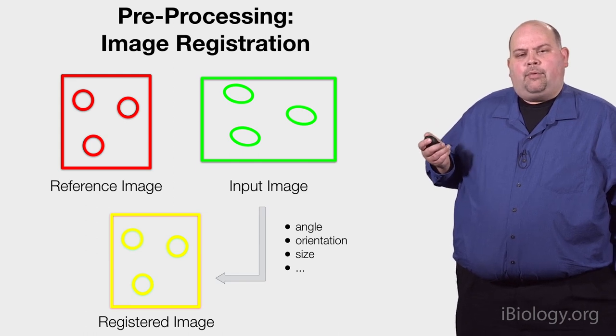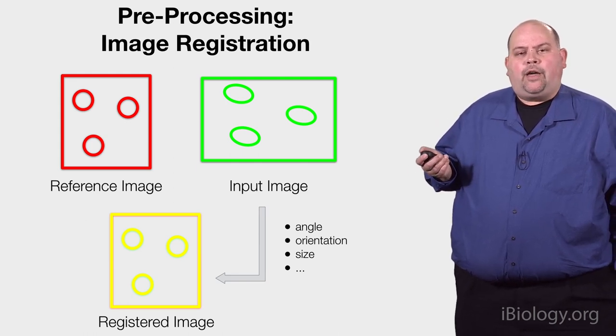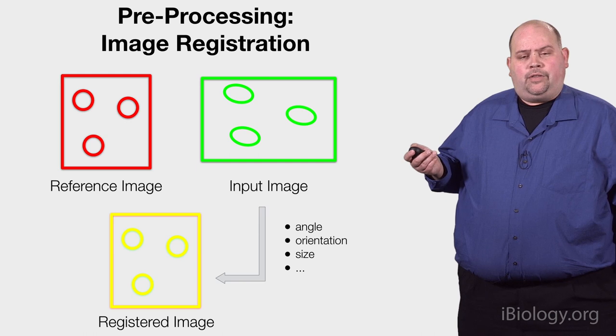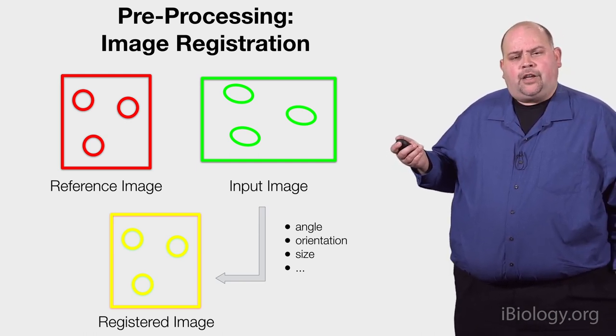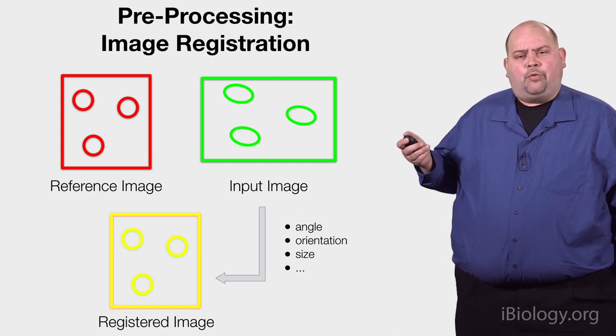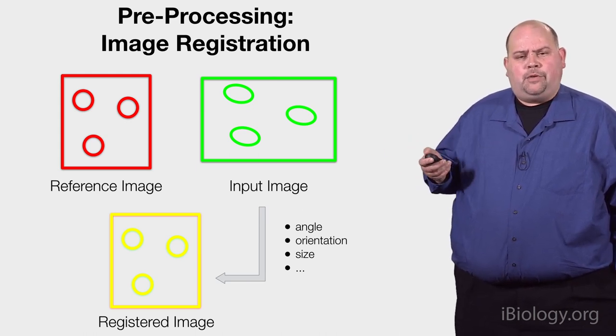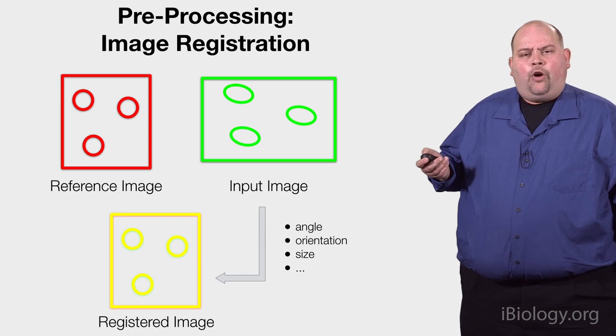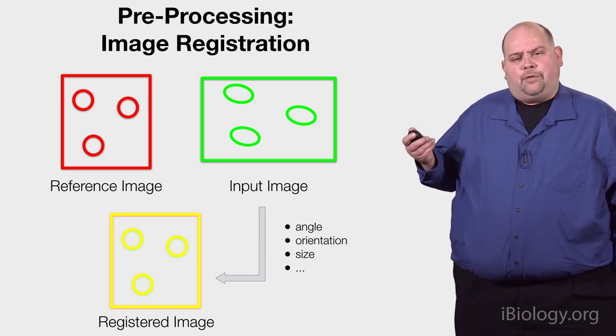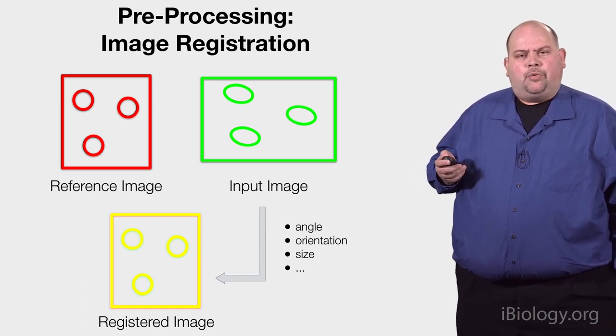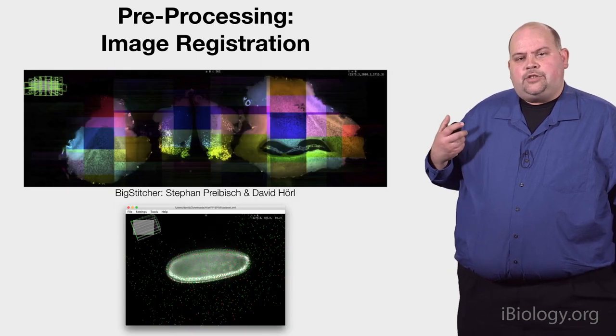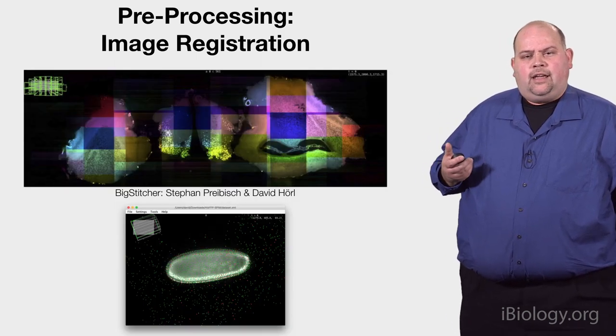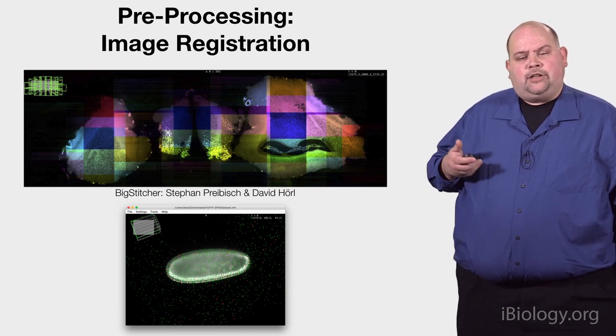And the thing to keep in mind is there can be many sources for why you might want to register and deal with issues of error. For example, when you're sectioning tissue, your knife blade may miss a cut. You may actually miss a section and you may have to register when it's harder to see between different views even though it's the same sample. Or in the case of light sheet where you actually have different views and you want to correlate them. So registration is a very important concept. And as I mentioned, this general technique can be used in many ways.